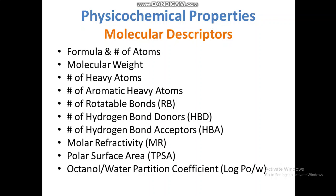Hydrogen bond donors are elements attached with hydrogen, like nitrogen bonded to hydrogen and oxygen bonded to hydrogen. Hydrogen bond acceptor atoms are those which form hydrogen bonds using lone pairs — these are electronegative atoms like nitrogen and oxygen. Additional descriptors include molar reflectivity, polar surface area, and octanol-water partition coefficient, which is logP.